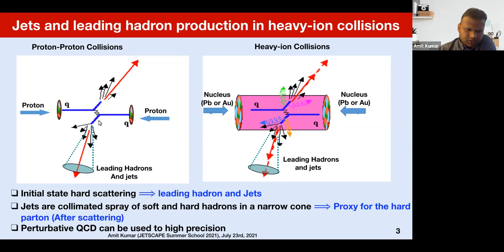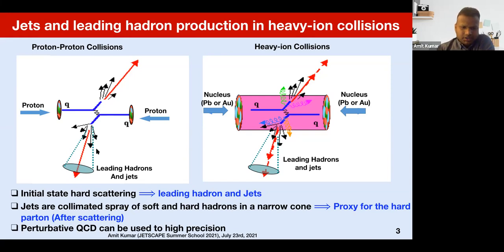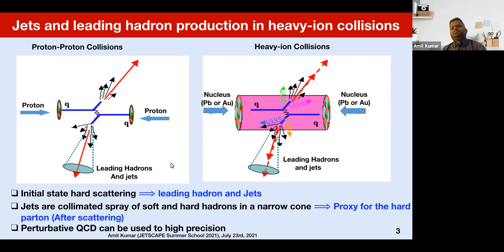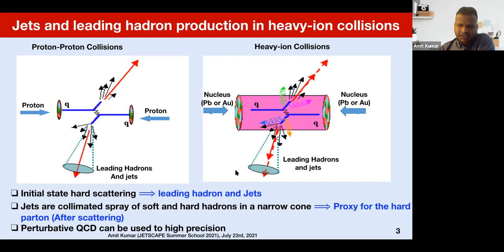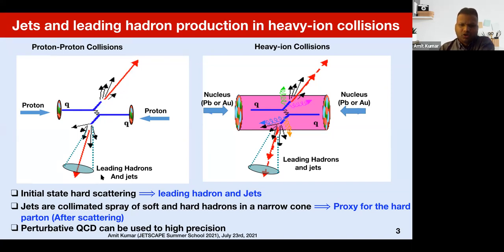To calculate these hard processes, one relies on perturbative QCD, and it can be used to calculate to high accuracy. In order to find out the property of quark-gluon plasma, one measures the yield of these leading hadrons or high-Pt jets in heavy-ion collision and then compares them in proton-proton collision. Their modifications essentially tell us the property of the quark-gluon plasma.